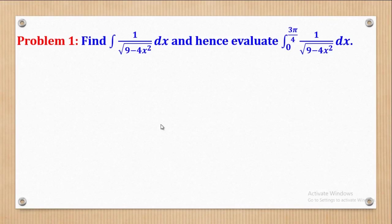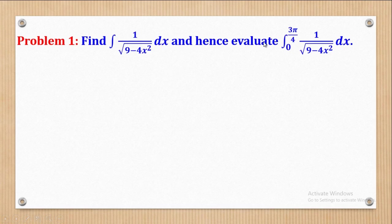We shall use this knowledge to go through the solution for this problem. They want us to find the integral of 1 over √(9 − 4x²) dx, and hence evaluate the definite integral from 0 to 3π/4 of 1 over √(9 − 4x²) dx.